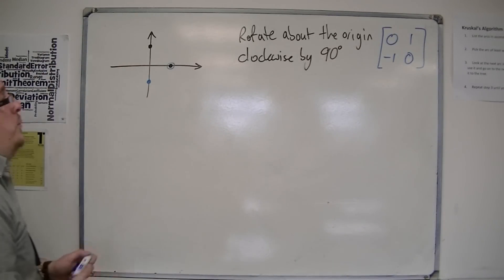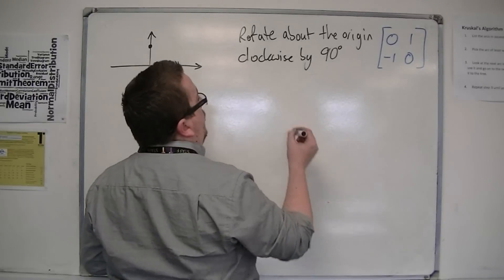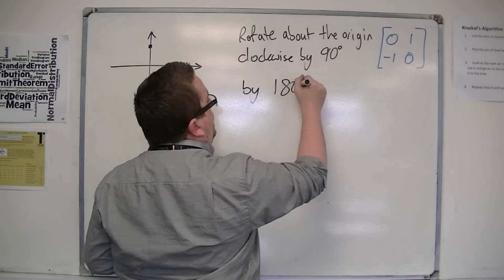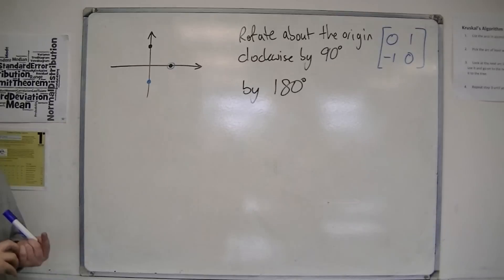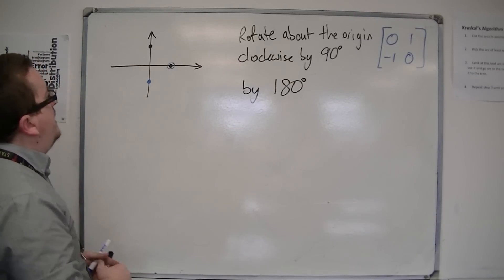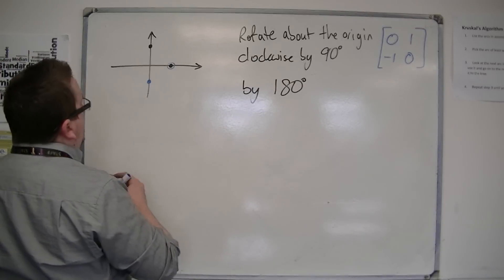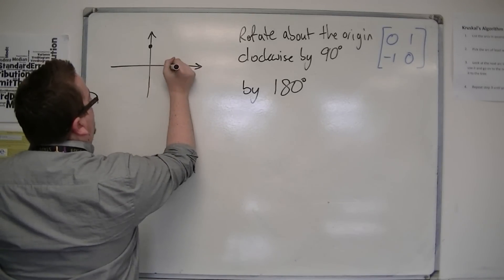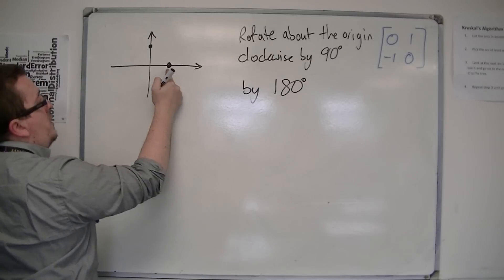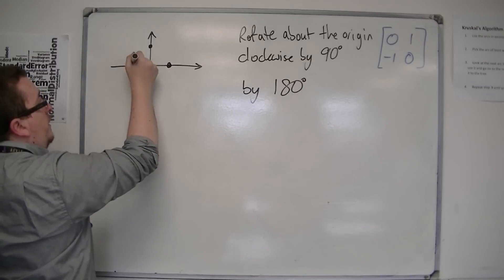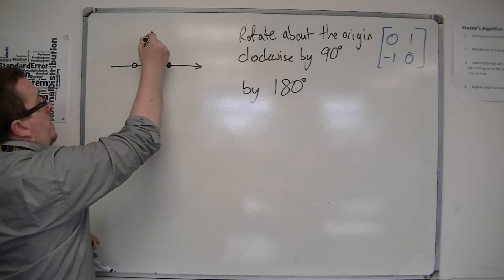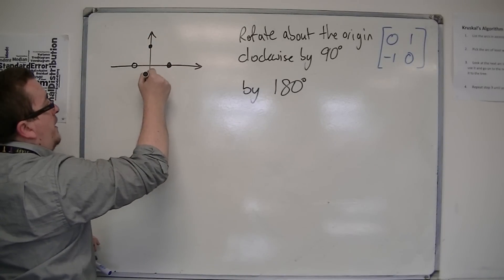So what if we said it was a rotation about the origin by 180 degrees? It doesn't matter whether it's clockwise or anticlockwise, obviously for 180 degrees. So now what we're going to find is that our point one zero will have rotated round so that it is now over here, and zero one will have rotated round so it is now down here.